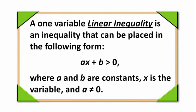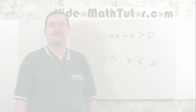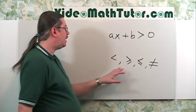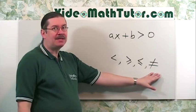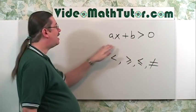A one-variable linear inequality is an inequality that can be placed in the following form: Ax plus b is greater than 0, where a and b are constants, x is the variable, and a is not equal to 0. Be aware that the other inequality symbols may be substituted in place of the greater than symbol in this formula.